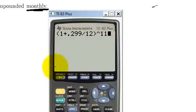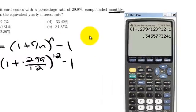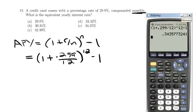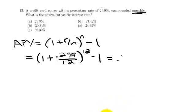Raised to the 12. Minus 1, equals, and we get .3435. So, let's write that down, .3435.